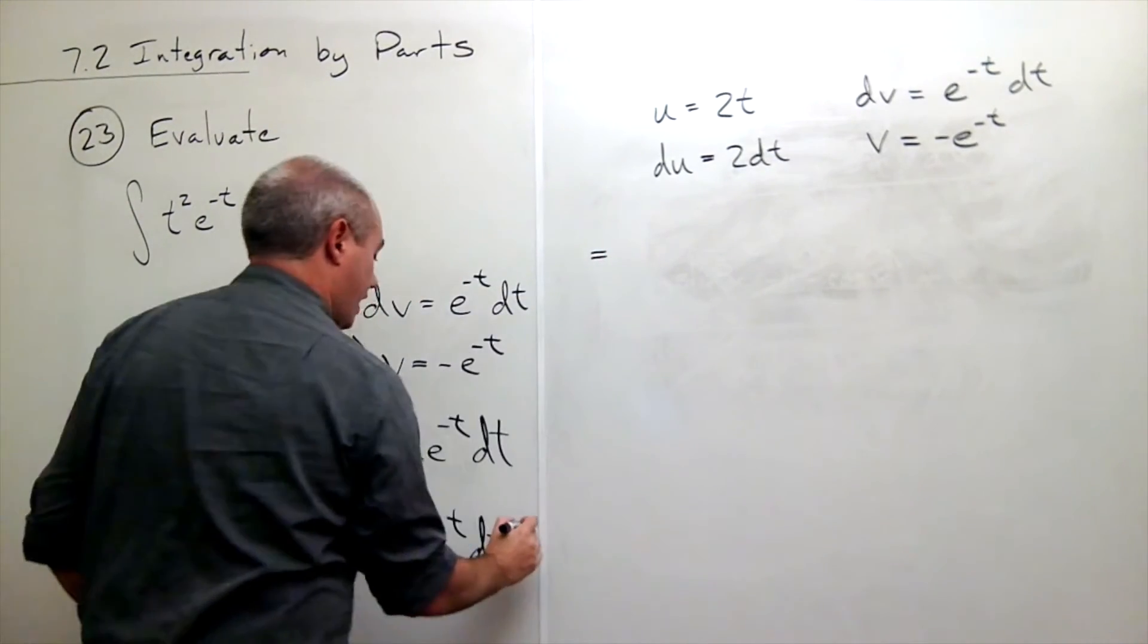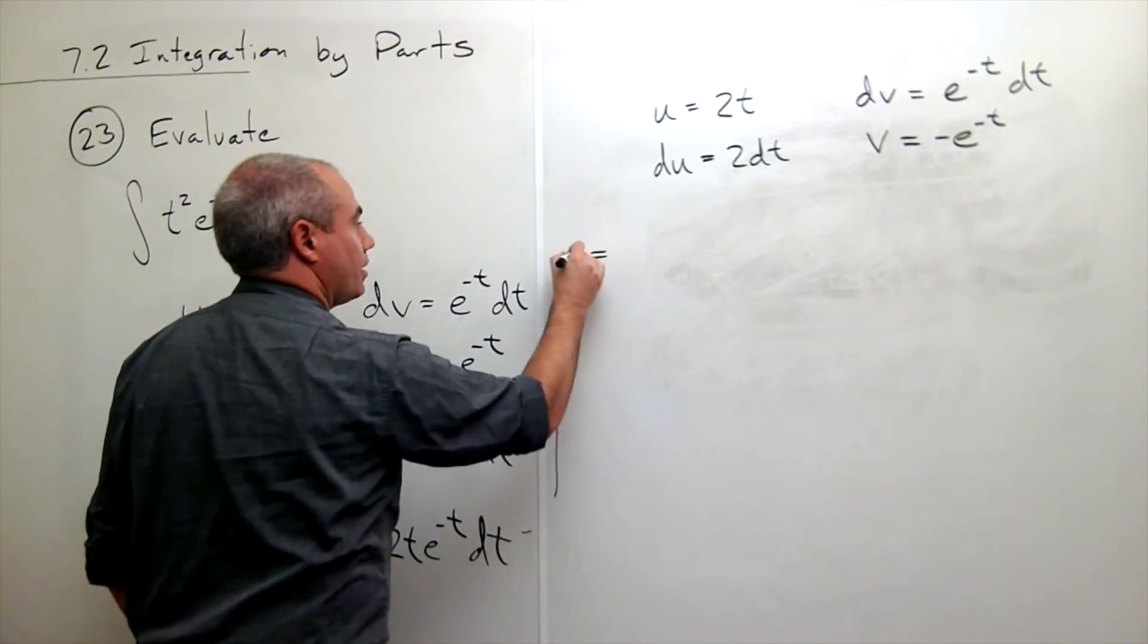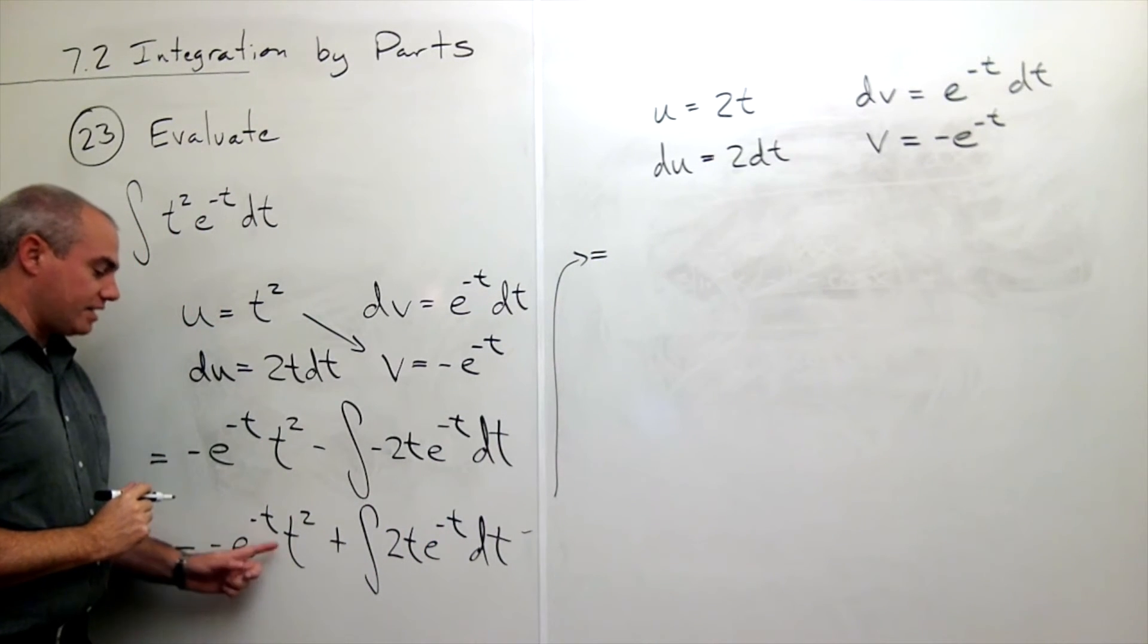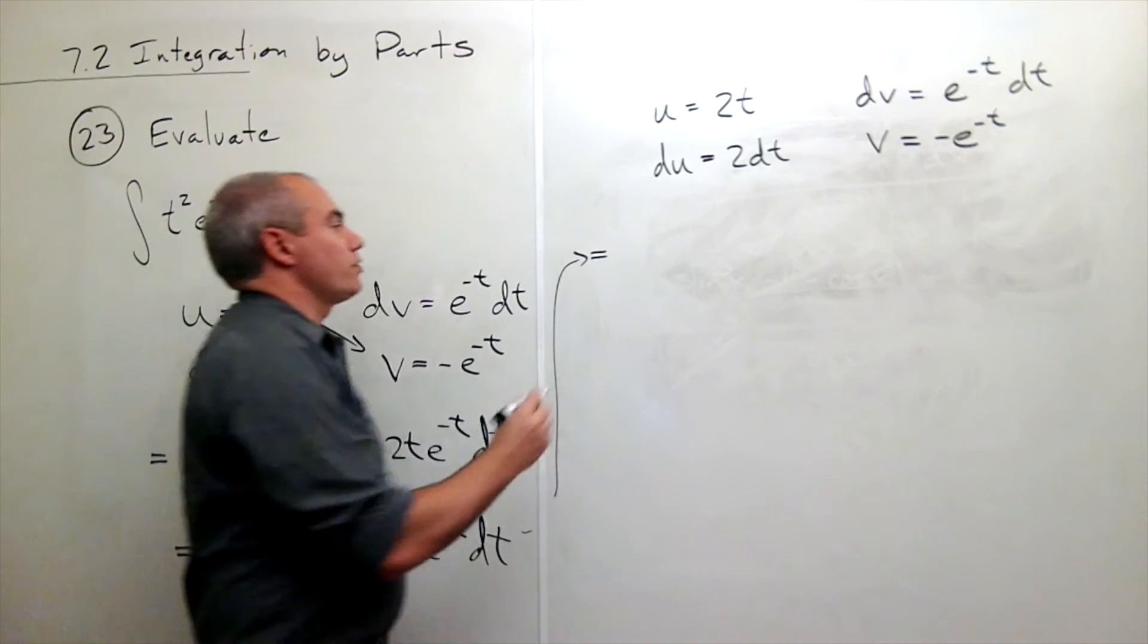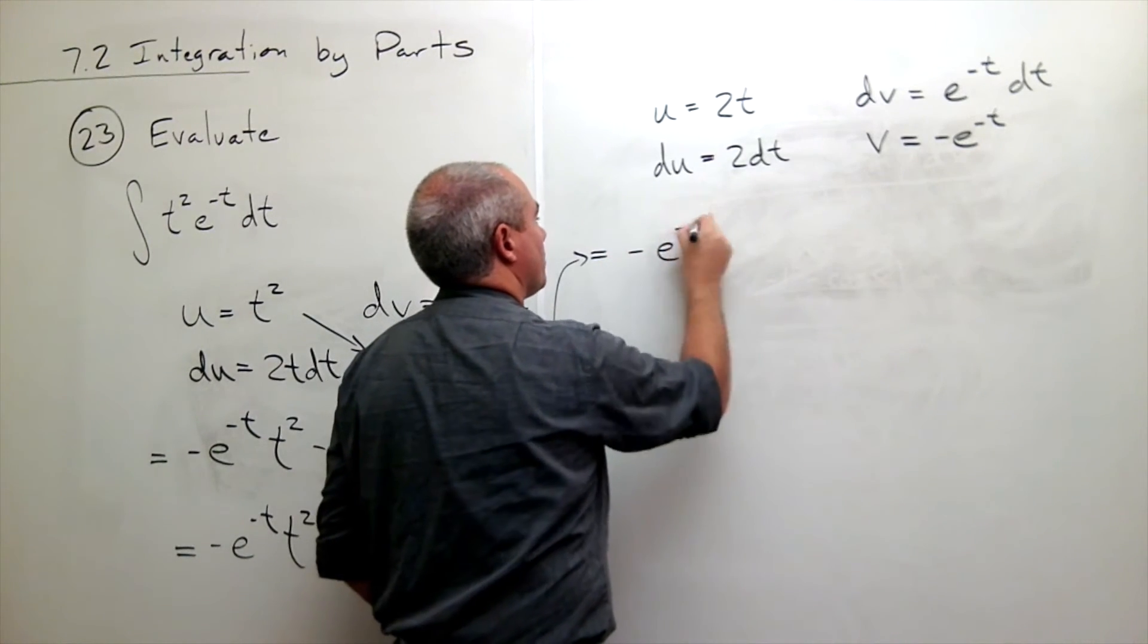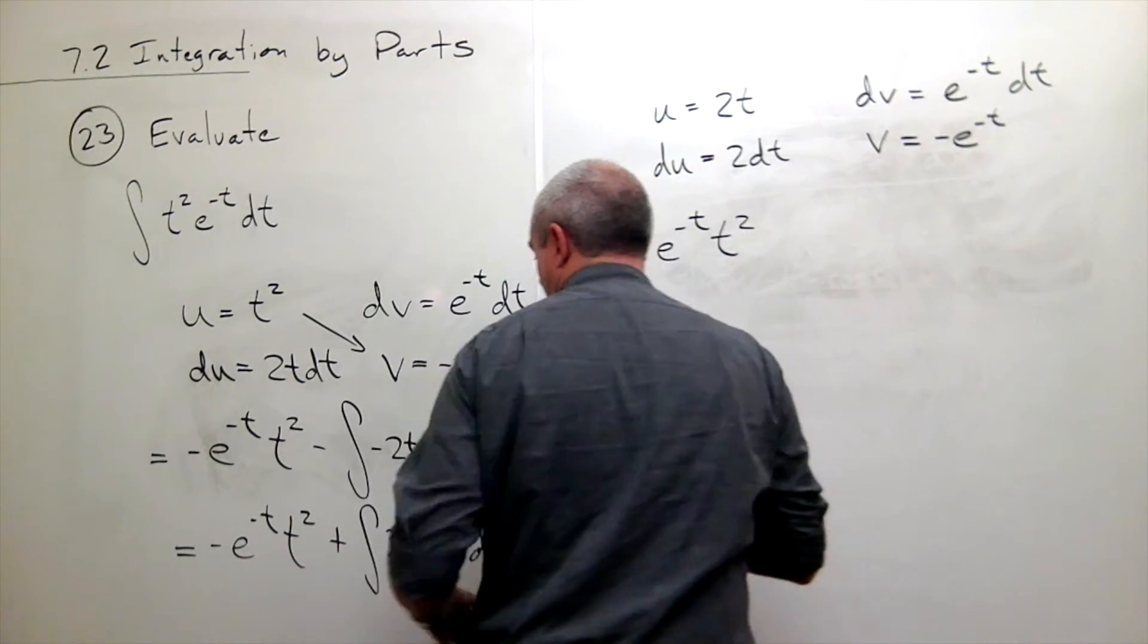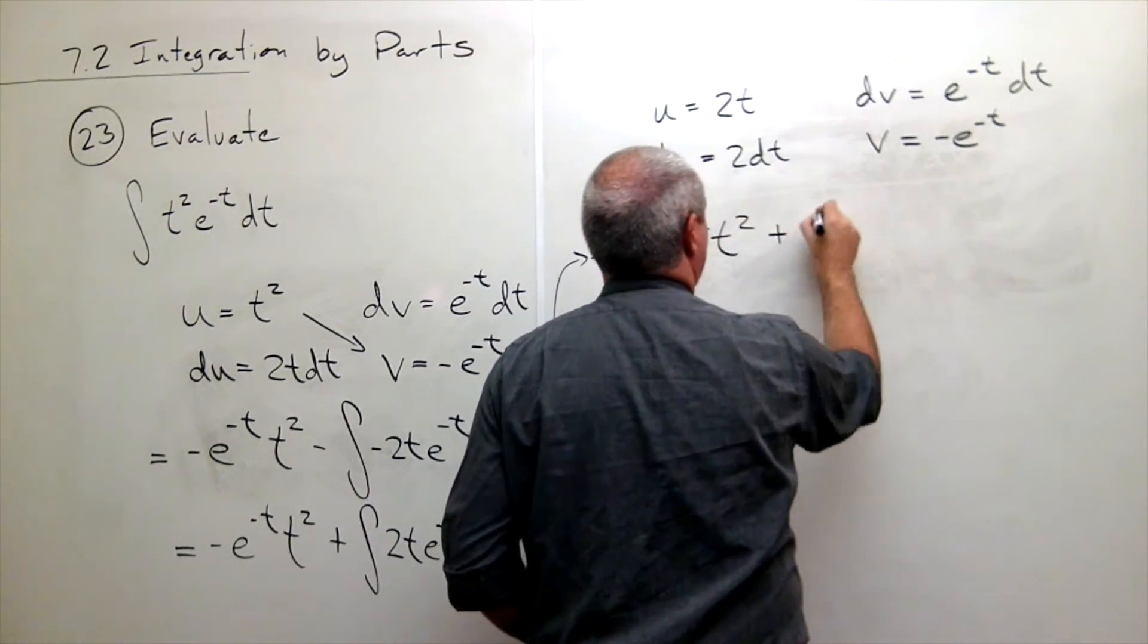So let's rewrite this guy. I'll bring this up here. I still have my minus e to the minus t times t squared. So I still have minus e to the minus t times t squared. And then I have this integral.